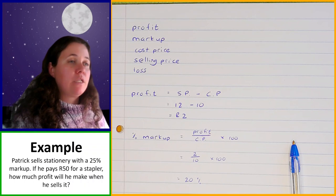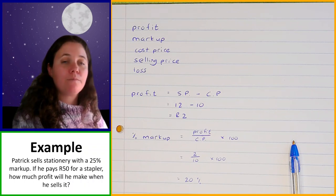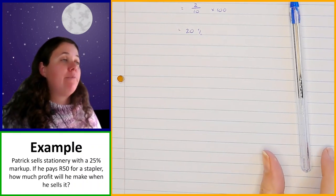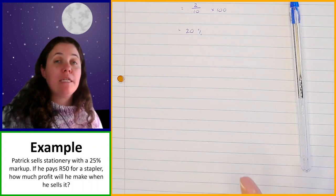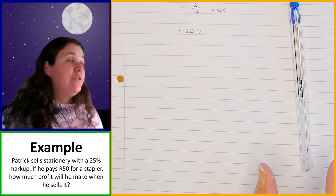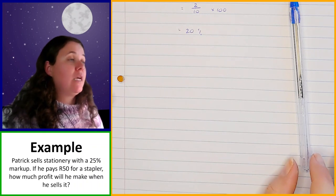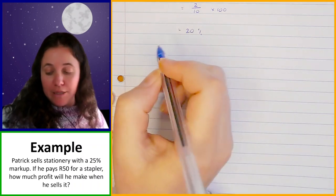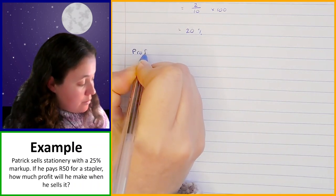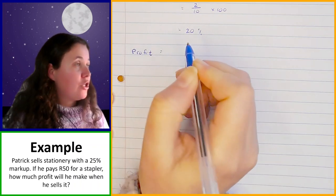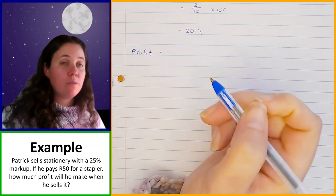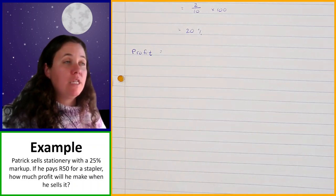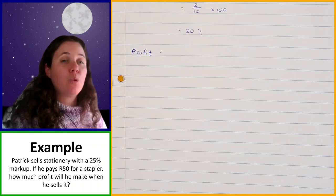Now let's have a look at another example. Patrick sells stationery with a 25% markup. So in this case, they're telling you what the percentage markup is. If he pays 50 Rand for a stapler, how much profit will he make when he sells it? In this case, we know that profit is going to be 25% of the cost price — 25% of how much he paid for it, because they've told us that he is marking it up by 25%.